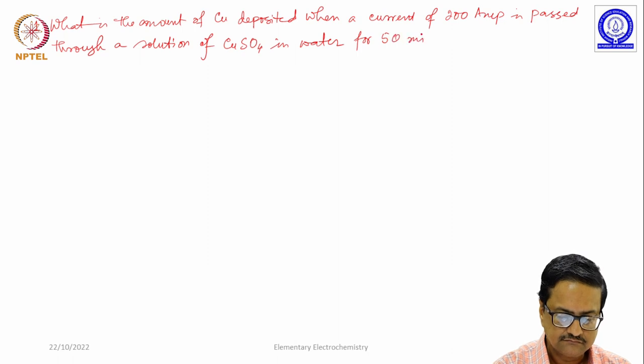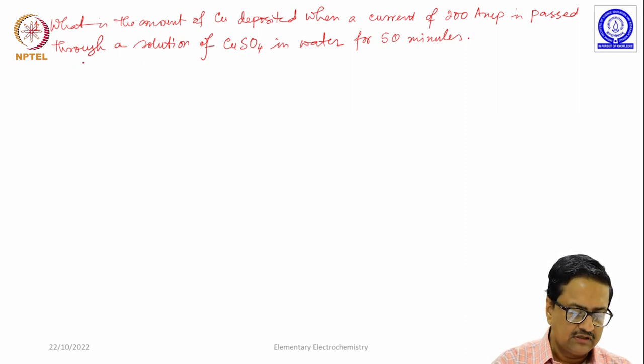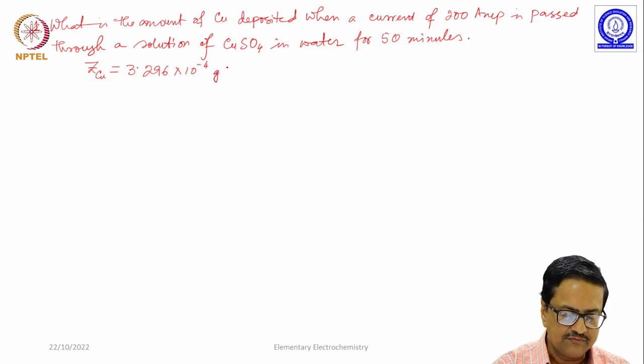Given is that the electrochemical equivalent z for copper is 3.296 × 10^-4 grams per coulomb.